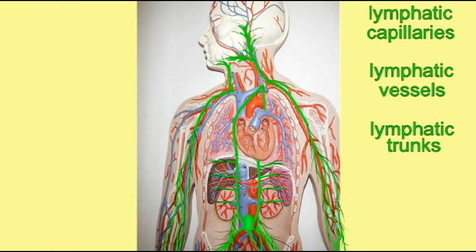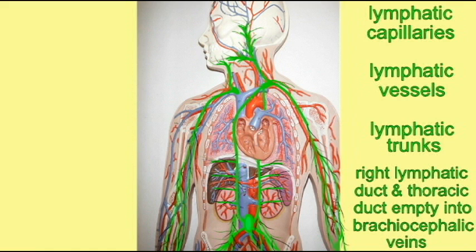Ultimately, lymphatic vessels empty into the brachiocephalic vein, where the jugular and subclavian veins meet, and thus the fluid which left a capillary in a tissue is then returned to the circulatory system at the brachiocephalic vein.